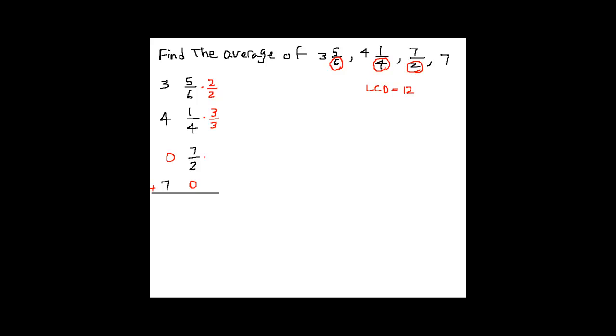So here we have 3 and 10 over 12, 4 and 3 over 12, 0 and 42 over 12, and here we have 7 and 0.